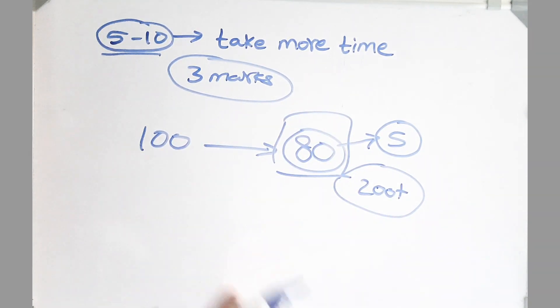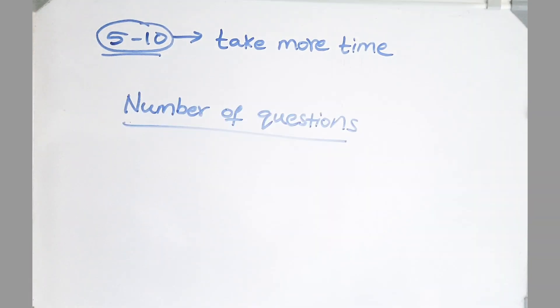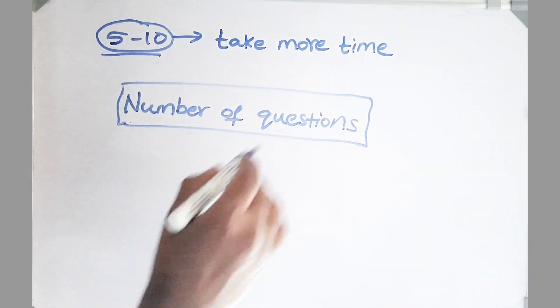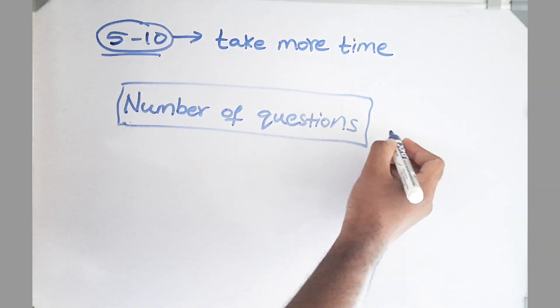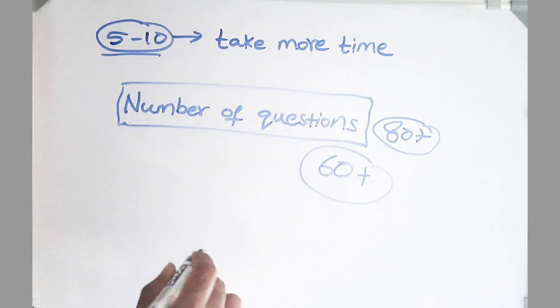By solving the paper, you will be knowing the difficulty level of the questions. Sometimes 60 questions with 100% accuracy is enough to get into the interview. Friends, before entering the exam, never ever put a target number of questions that you have to solve. Because it depends on the difficulty level of the question. Sometimes you have to solve 80 plus questions. But sometimes all you need to do is just solve 60 questions with 100% accuracy, and there is a high chance for you to get into the interview.